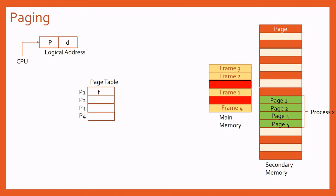The next solution is the page table, which is the core concept of paging. We create a page table, which is a data structure stored in main memory. The page table contains one entry per page of a particular process — each process has its own independent page table. In this example, process X has its own page table. For each page, we store the corresponding frame number — or more precisely, the base address of that frame in main memory.